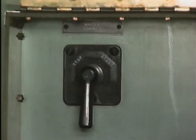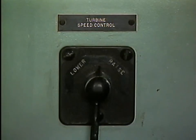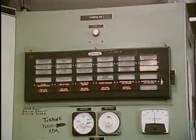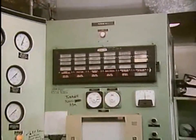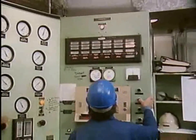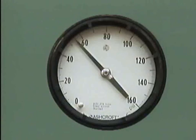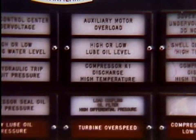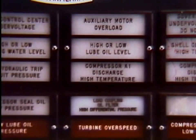Many compressors are started and stopped from a control panel. This control panel also has controls to regulate the speed of the compressor and indicators that provide information about the compressor's operating conditions. This one displays lube oil pressure. The control panel also contains alarms that let personnel know when abnormal and potentially damaging conditions exist.